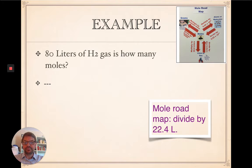Let's do another one. 80 liters of hydrogen gas, H2. How many moles? So mole roadmap, we're in liters of gas. Now, this section of the mole roadmap, you may only use if the chemical is in the gas phase. If it's not a gas, can't do it. This is a gas, so we're good. So 80 liters, how many moles, follow the arrow, divide 80 by 22.4.